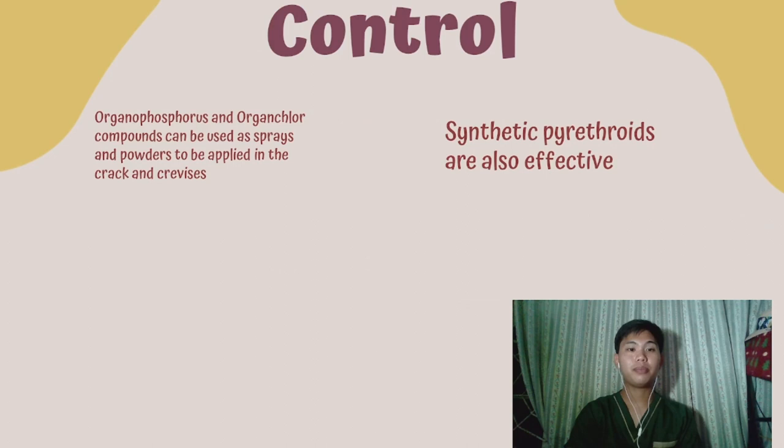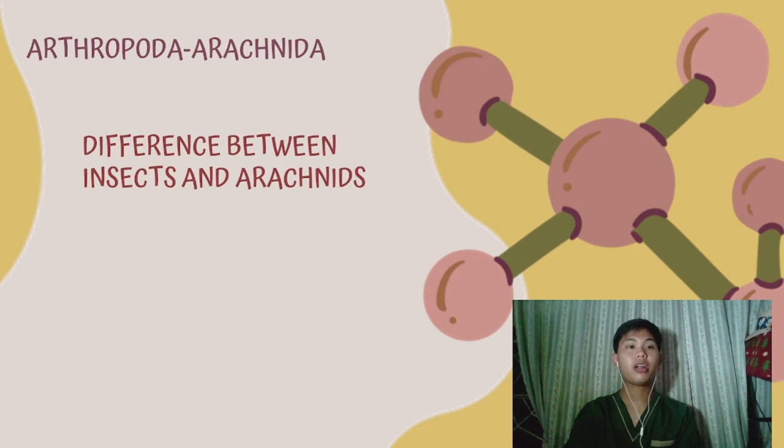To control these bugs, organophosphorus and organochlorine compounds can be used as sprays and powders to be applied in cracks and crevices. Synthetic pyrethroids are also effective.